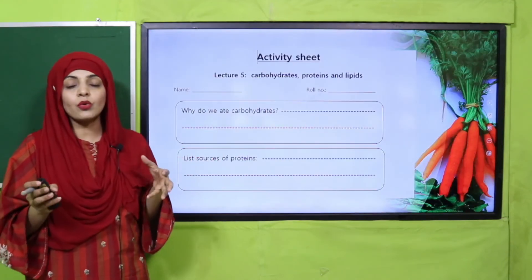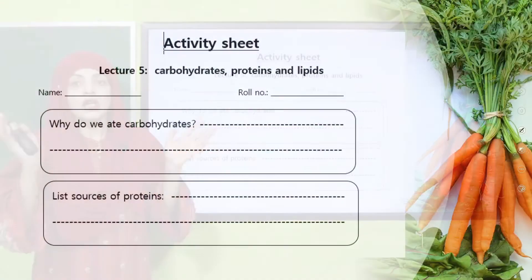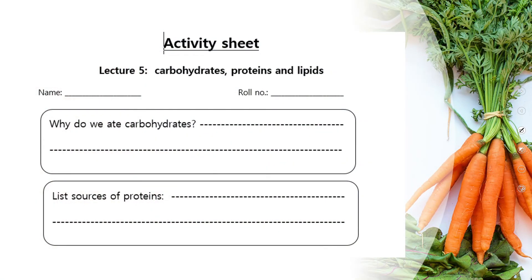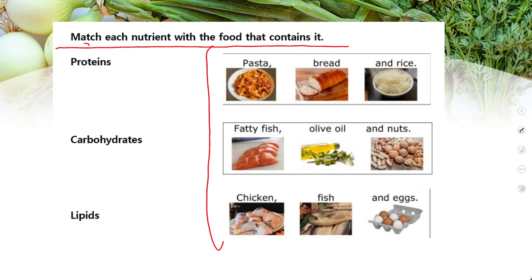Now it is time for practice. You can download this worksheet from the description box below this video, or get it in print form from your teacher. Write down your name and roll number. Then answer: why do we eat carbohydrates? Because they are the fuel for our body. List sources of proteins. Next, match each nutrient with the food that contains it. Pause the video and complete the worksheet.